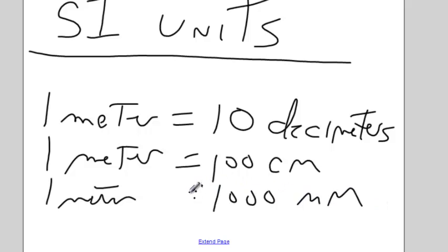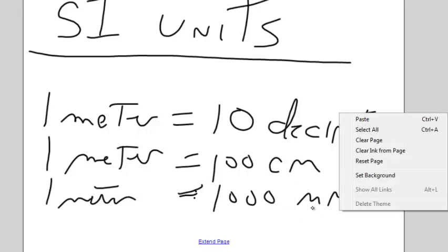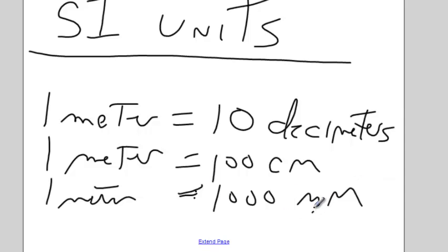So millimeters are tiny things. Notice that 1,000 we had back up in kilo, but the 1,000 was next to the base unit. Here the 1,000 is next to the thing with the prefix. So be careful about that.